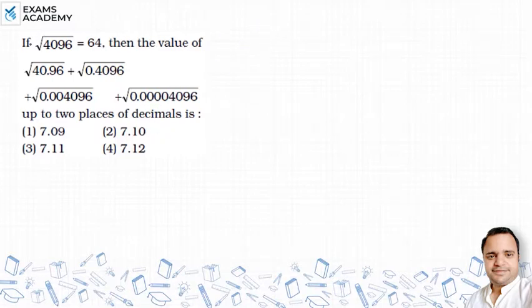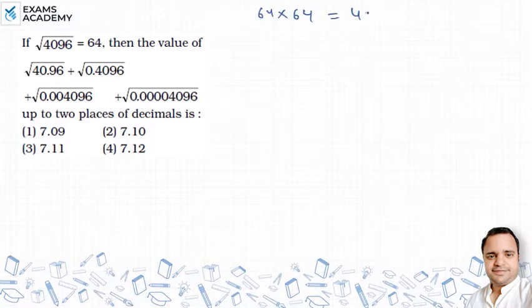From the information given in the question, we can see that √4096 = 64, which means 64 × 64 = 4096.